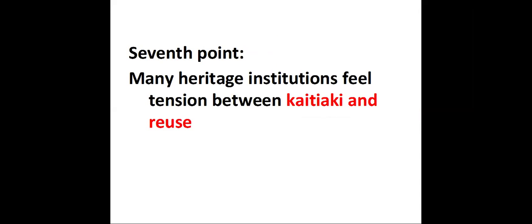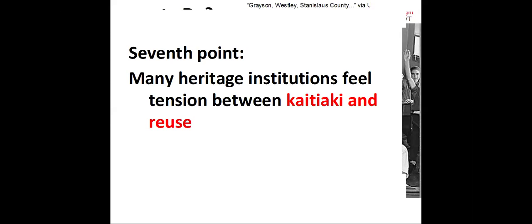The seventh point, from an institutional point of view, is that many institutions feel a tension between the kaitiaki role of looking after stuff and the public good role of enabling the public to access and reuse the works they hold. That's a real tension, and I think Creative Commons licenses are a pretty good solution to some of these issues — though they are unable to solve all of them.